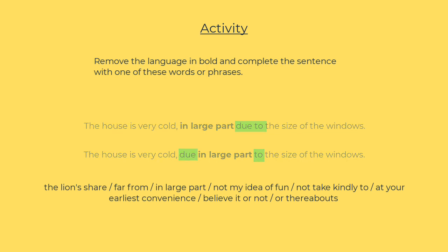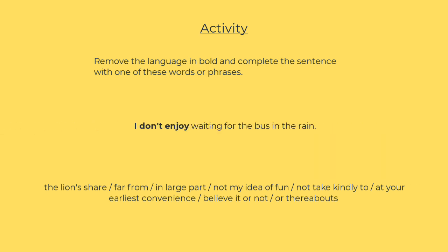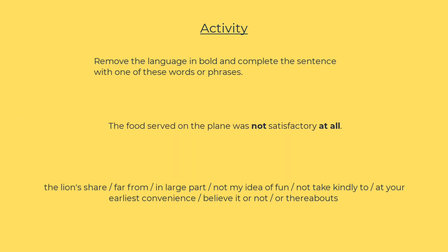Okay, next: I don't enjoy waiting for the bus in the rain. And finally, the food served on the plane was far from satisfactory. Well done — those are just a few examples of the kind of less common language that can help you get a 7 or more for vocabulary.